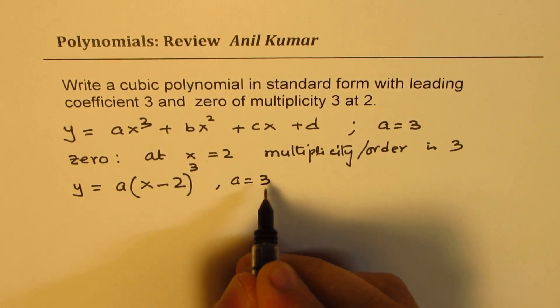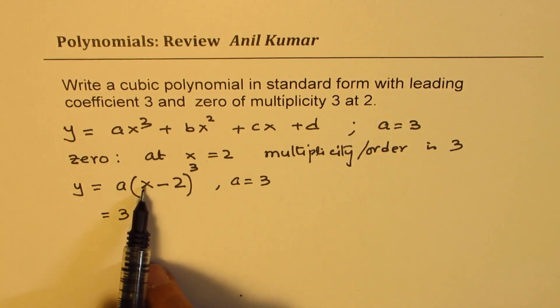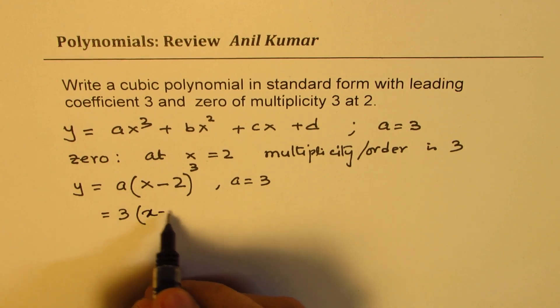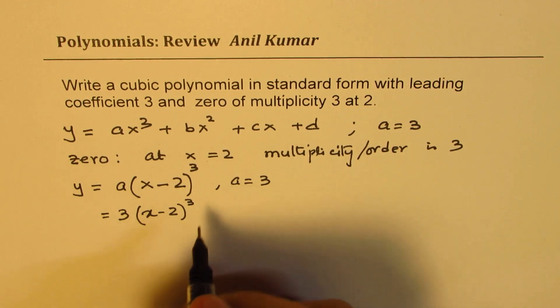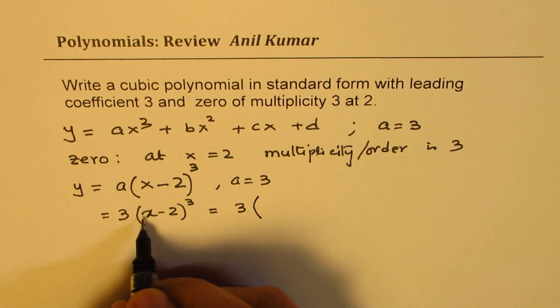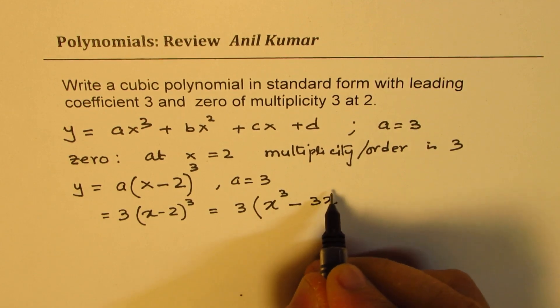We can substitute 3 for a, so we get 3 times (x - 2)³. Now we can expand this using the formula a³ - b³. Let's write down the formula here.